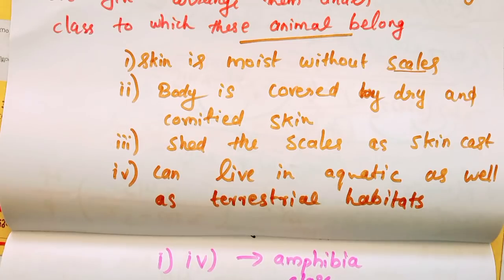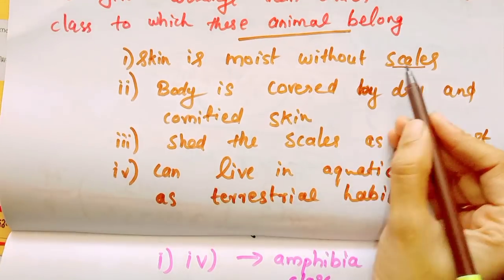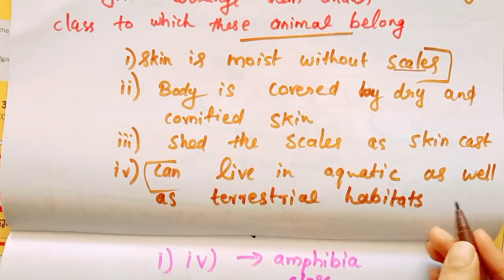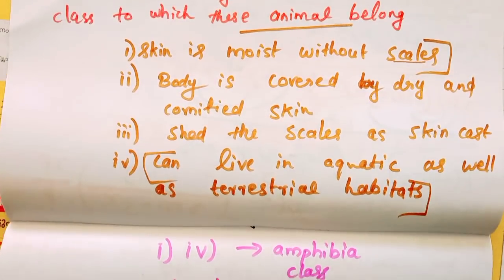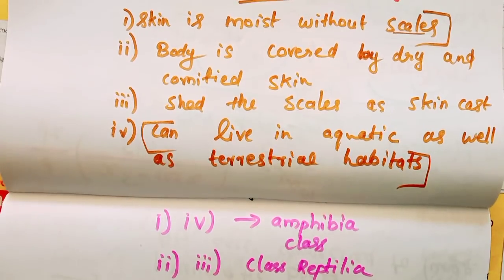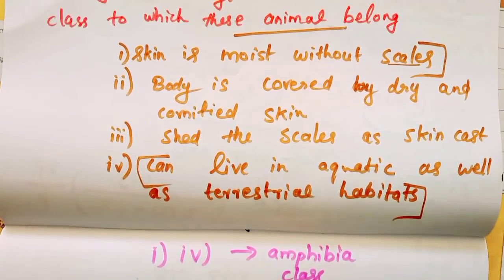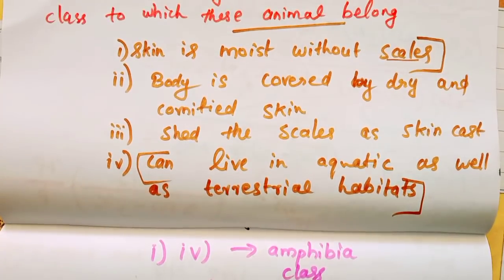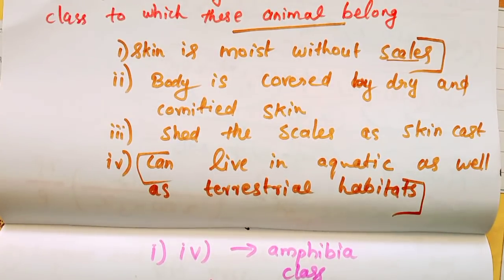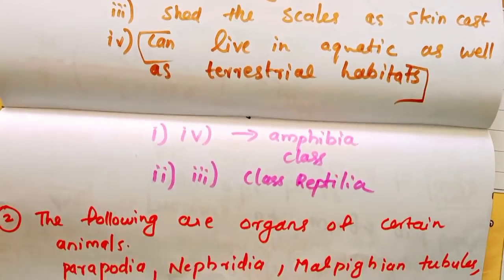Skin is moist without scales — aquatic and terrestrial habitat — belongs to the Amphibia class. Bodies covered by dry skin, shed scales, and large scales belong to the Reptilia class.